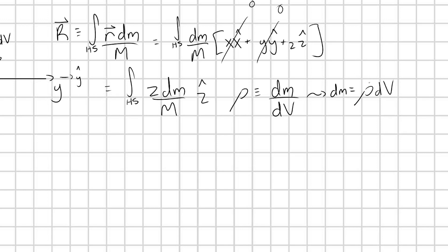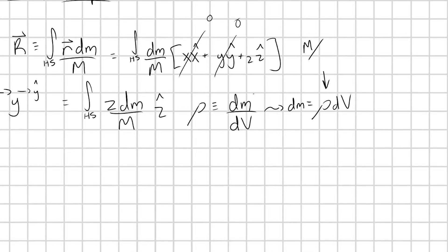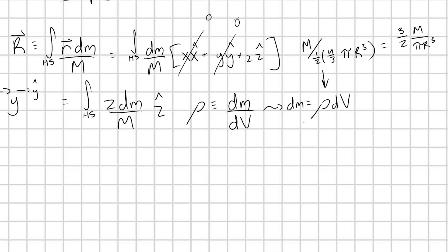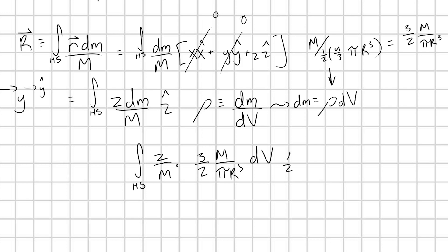Because we have a uniform hemisphere, we can simply calculate ρ as the total mass of our hemisphere divided by its volume. The volume of a hemisphere is just half of a sphere — one-half times four-thirds π r³ — which gives us ρ = (3/2) m / (π r³). Now let's plug everything in: the integral over my hemisphere of z over m times (3/2) m / (π r³) times dv, still in the z-hat direction.